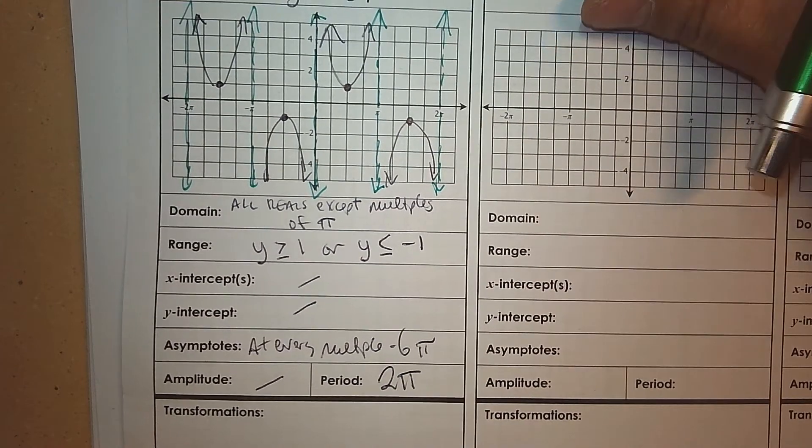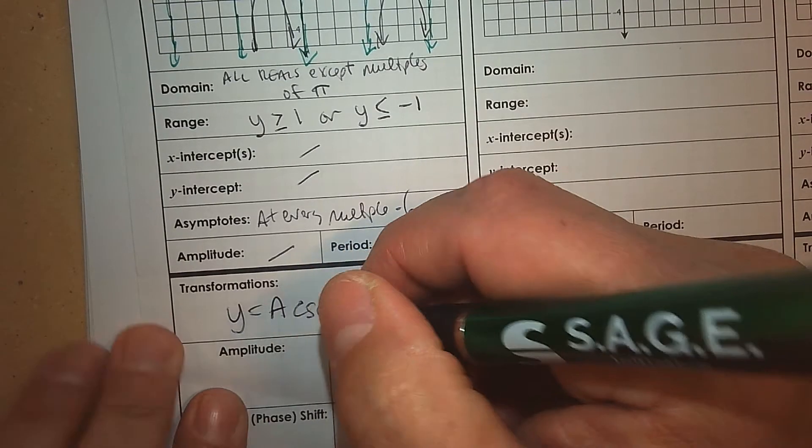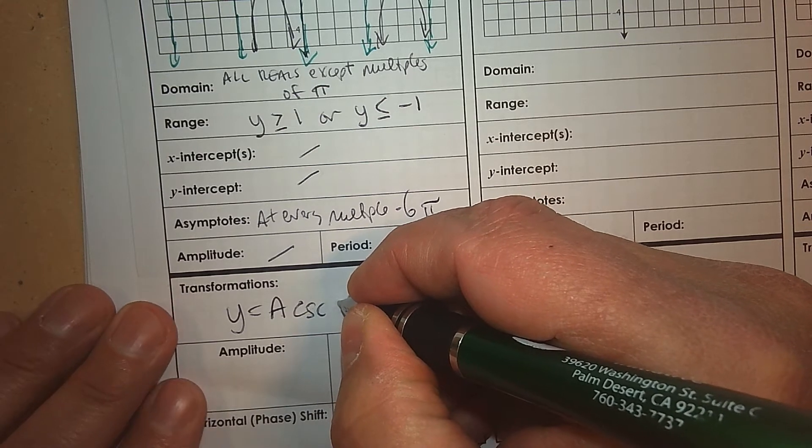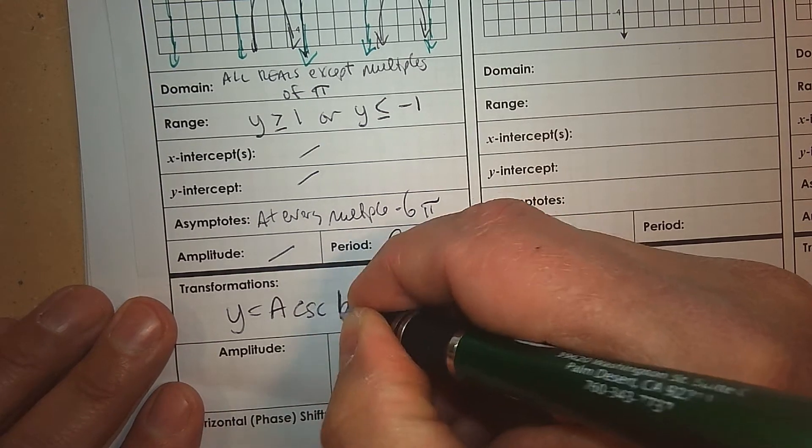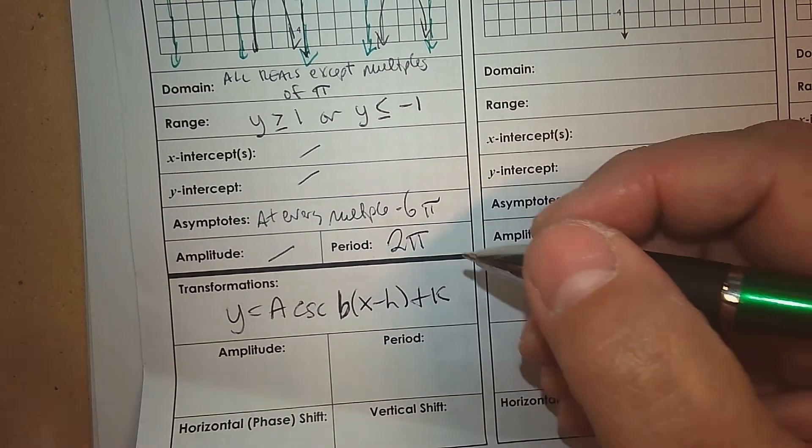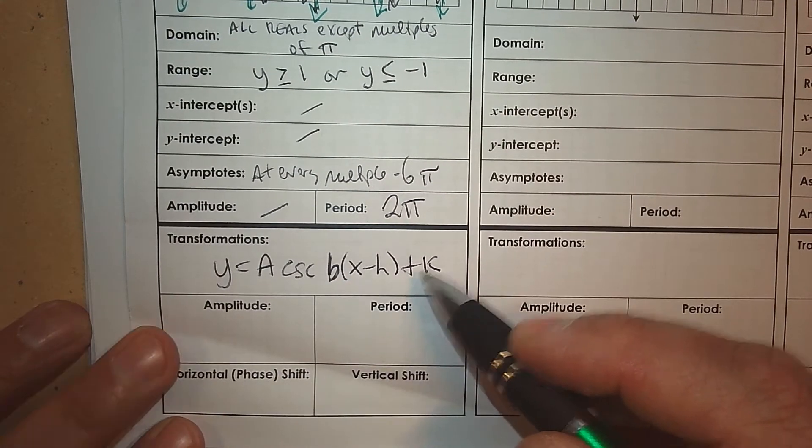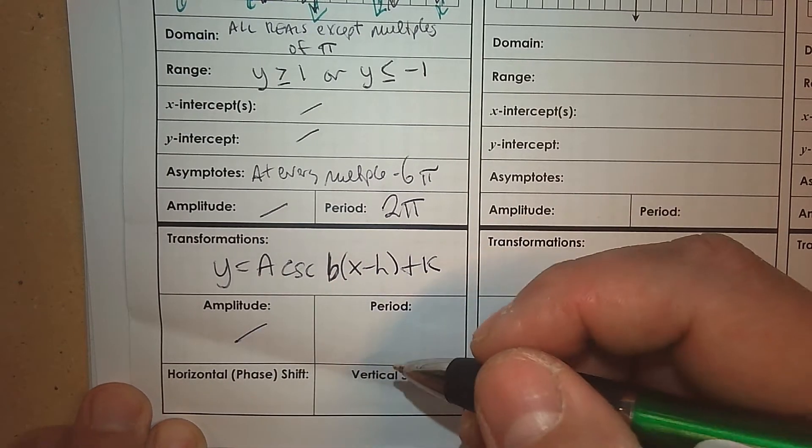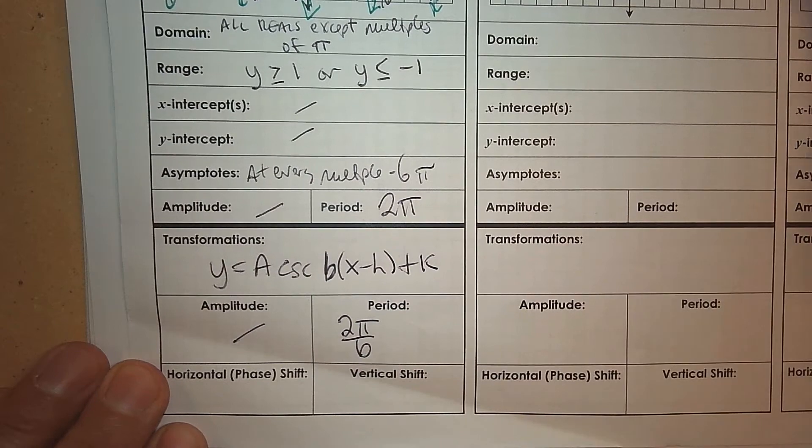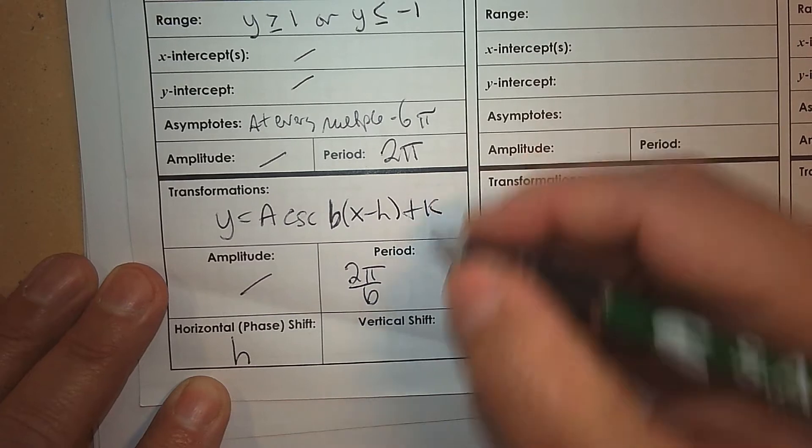When you get transformation, so if it was something in this realm, right? There is no amplitude defined, but the period would be 2 pi divided by b, or to undo b. The horizontal or phase shift would be h, and the vertical shift would be k.